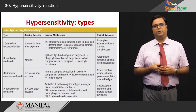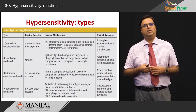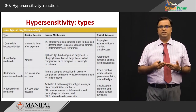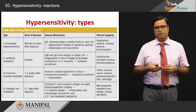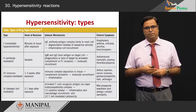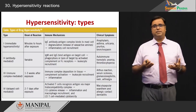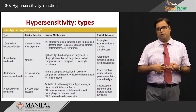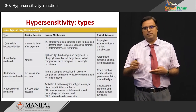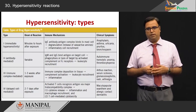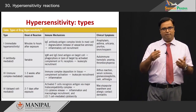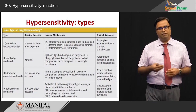The type 1 reaction is an immediate type of response. As the name itself suggests, it occurs within hours or minutes of exposure to a particular antigen. It is typified by anaphylaxis, asthma, urticarial reactions, pruritus, and even bronchospasm. It is entirely to do with an IgE mediated response.